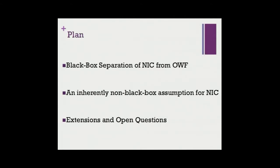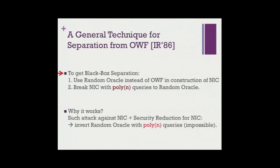First, the black-box separation from one-way functions. There is a general technique for this, going back to the first paper in this field by Impagliazzo and Rudich. The idea is simple but elegant. If you want to rule out black-box constructions from one-way functions, since the construction is black box, it doesn't care whether your function is efficient or not. In particular, you can use a random function — a random oracle — instead of an efficient function, and it still has to work as an implementation. If you can break your scheme relative to a random oracle using only polynomially many queries, you have obtained a black-box separation.